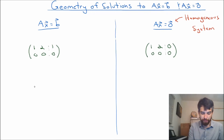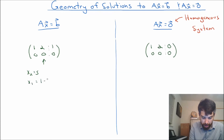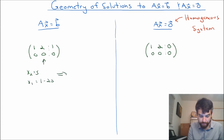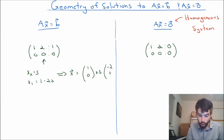Doing Ax = b first, I note that I have a free column here, so I'm going to set x₂ equal to s, and x₁ is equal to 1 minus 2s. Or if I put it into vector form, I can say my vector x is: its first component is (1, 0), plus s times (-2, 1).